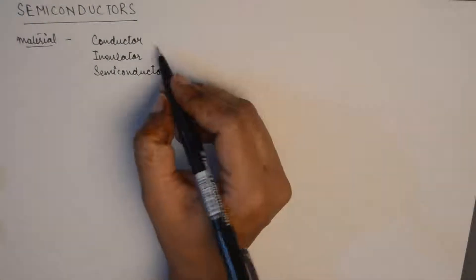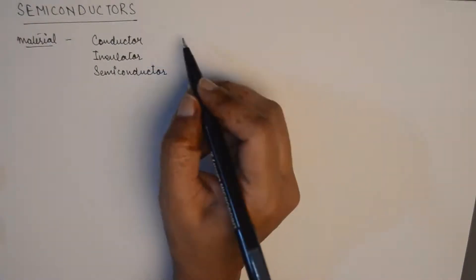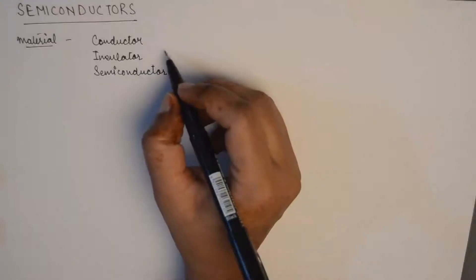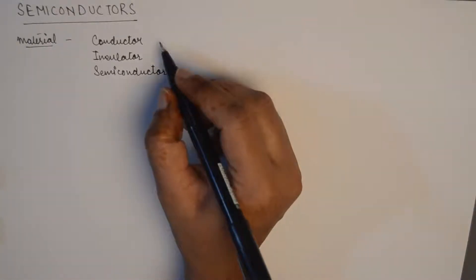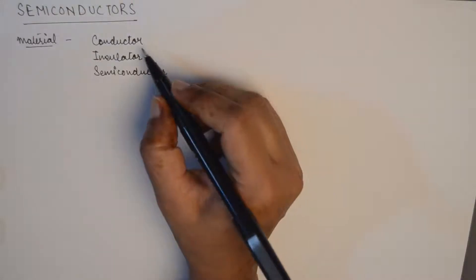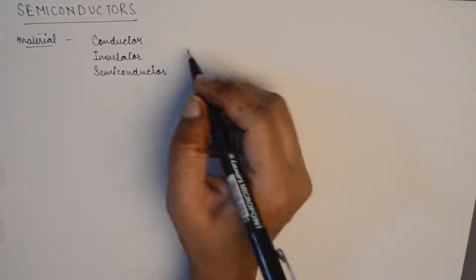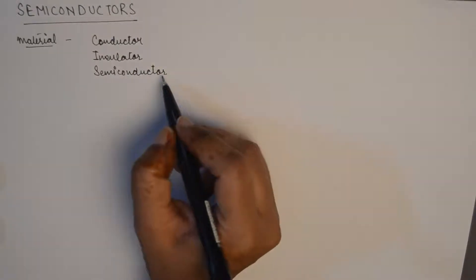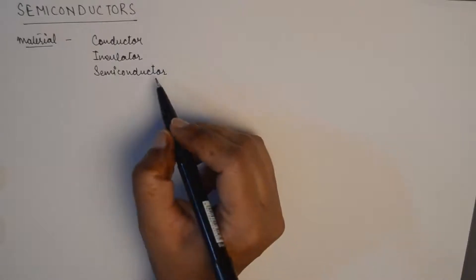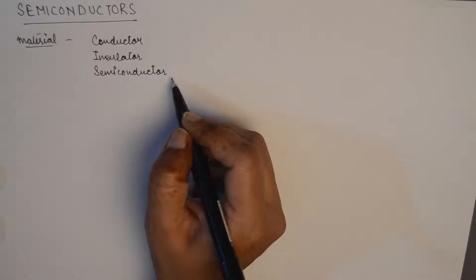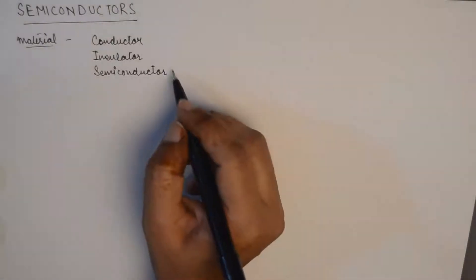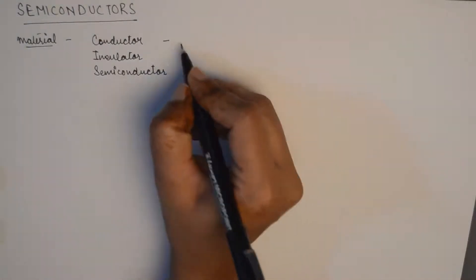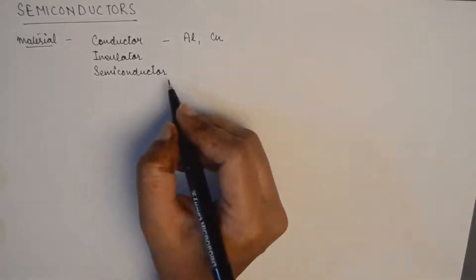All the electrical wires you might have seen in your home appliances and plugs use conductors. A conductor is one where the flow of current is easy at room temperature, allowing the flow of current through it. An insulator is one which does not allow the flow of current. Semiconductor materials are intermediate — under certain conditions they allow the flow of current, otherwise they do not. Common conductors include aluminium and copper.